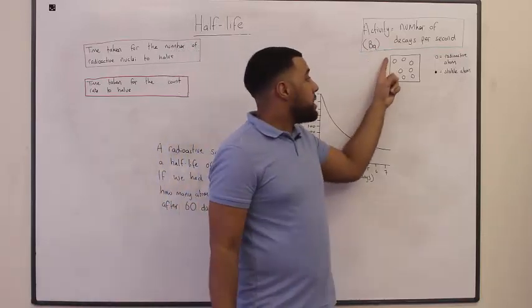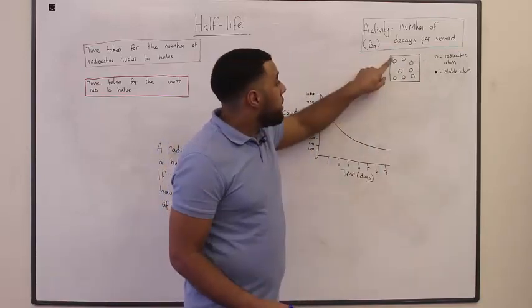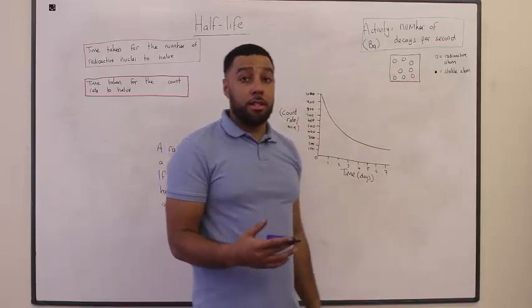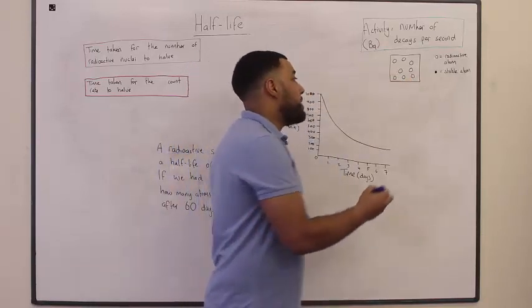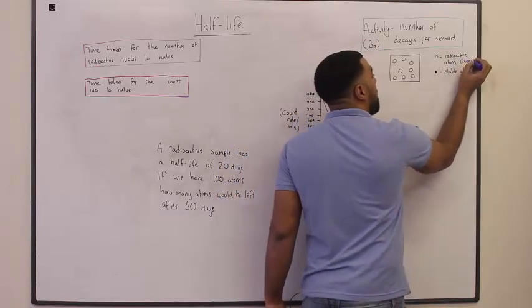So, let's say this is our radioactive sample, and we have one, two, three, four, five, six, seven, we have eight radioactive atoms. These are also known as the parent atoms.